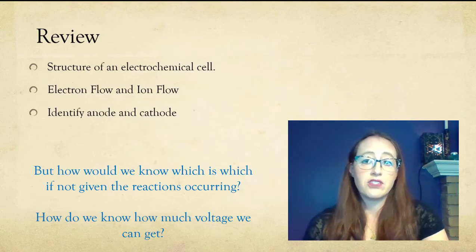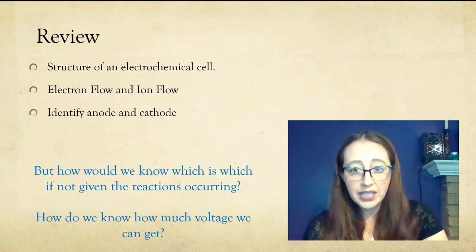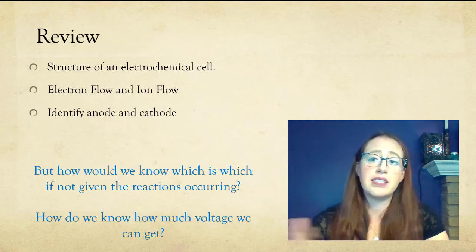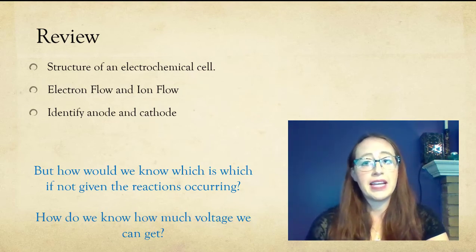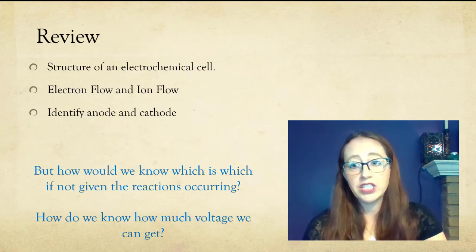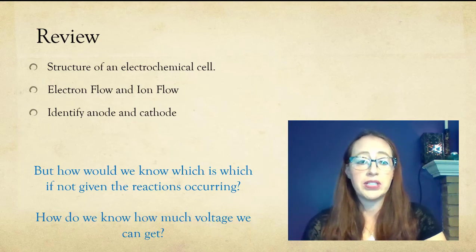In summary, we have discussed the structure of an electrochemical cell. And as part of this, we've also discussed the electron flow and the ion flow. You'll need to identify the anode and the cathode of reactions. And we're going to go into this a bit more in the next video as well.